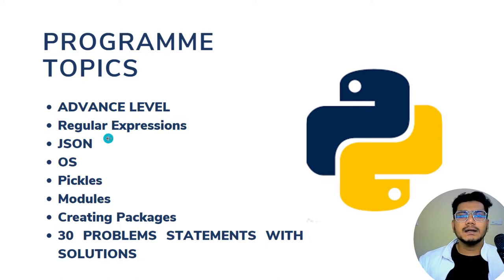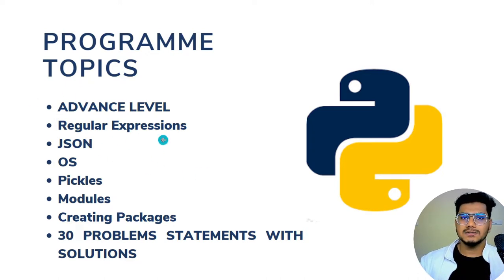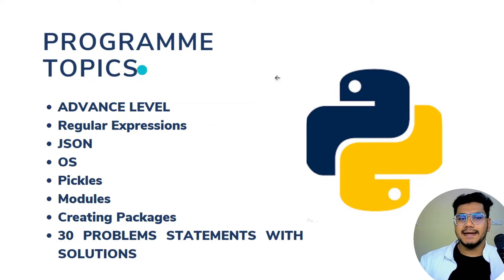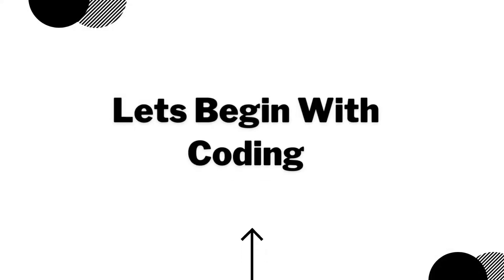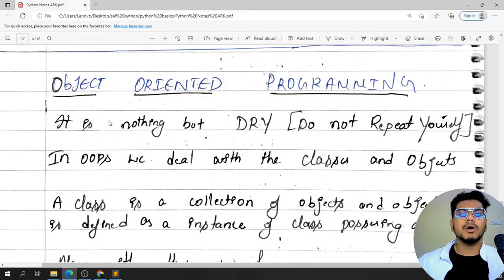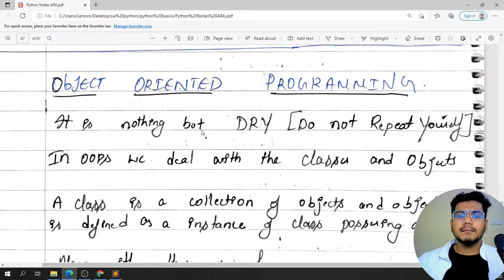My aim is to teach you advanced programming in this series. Basics have been covered in my previous playlist — you can go ahead and watch there. For prerequisites, you'll need to have Visual Studio Code as the editor and Python installed. Now let's start with what is object oriented programming.